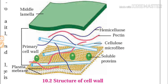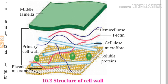You can see here the structure of the cell wall. The middle lamella is the upper green layer. The primary cell wall contains hemicellulose, pectin, cellulose, and microfibrils of proteins. Below that is the plasma membrane, which is selectively permeable.